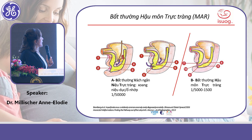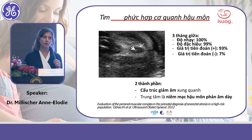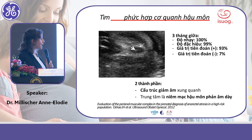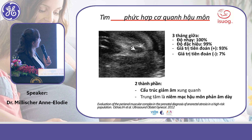You can have distal atresia — meaning anorectal malformation. We must be very aware of the cloaca. I propose to check systematically the perianal muscular complex, as Professor Salomon demonstrated during the live scan this morning — which means that normally you can rule out a cloaca.